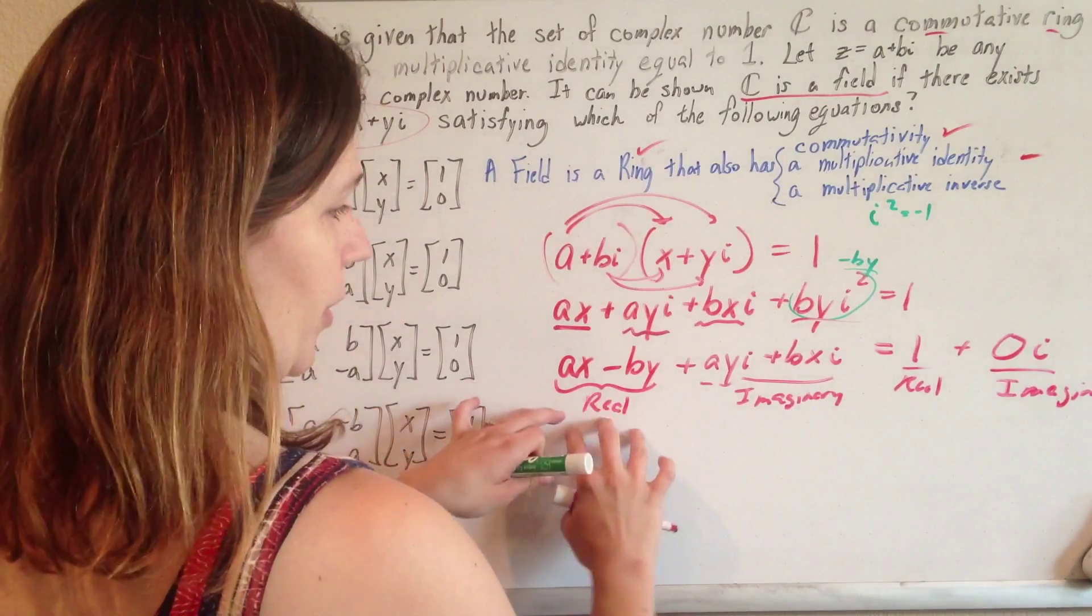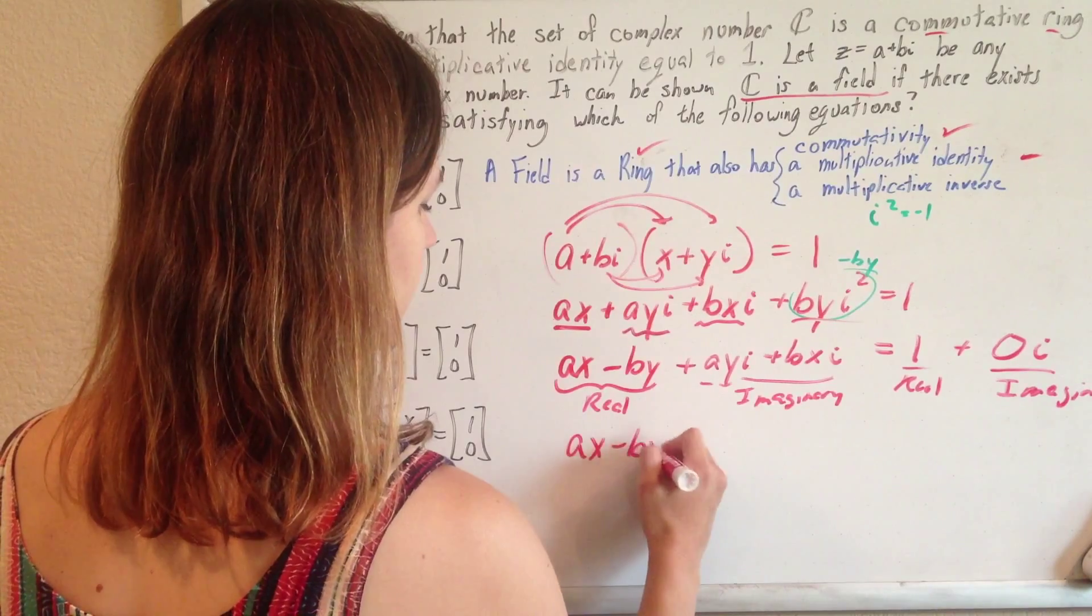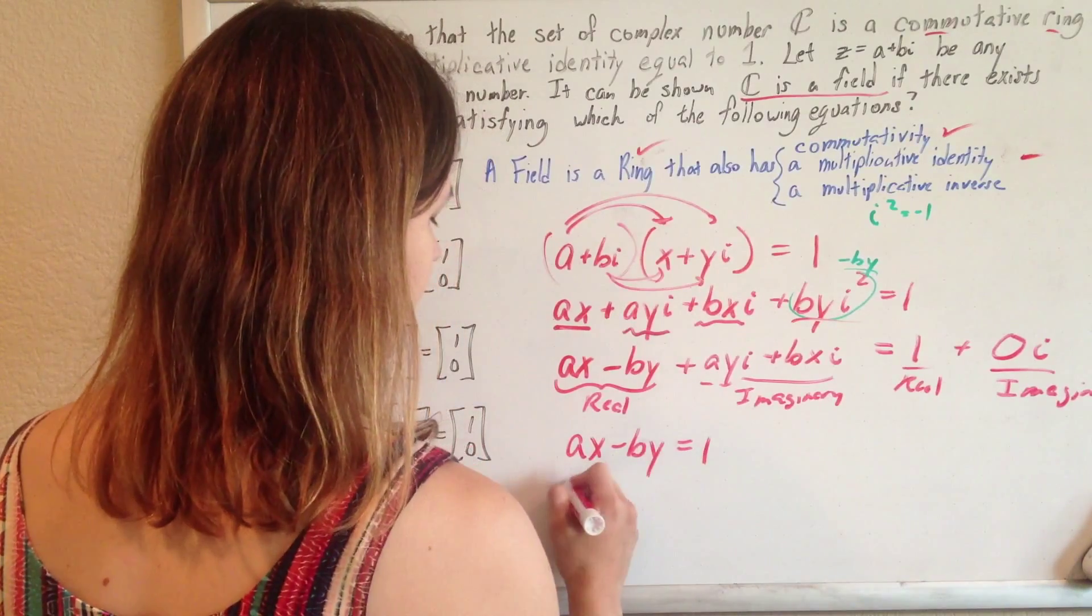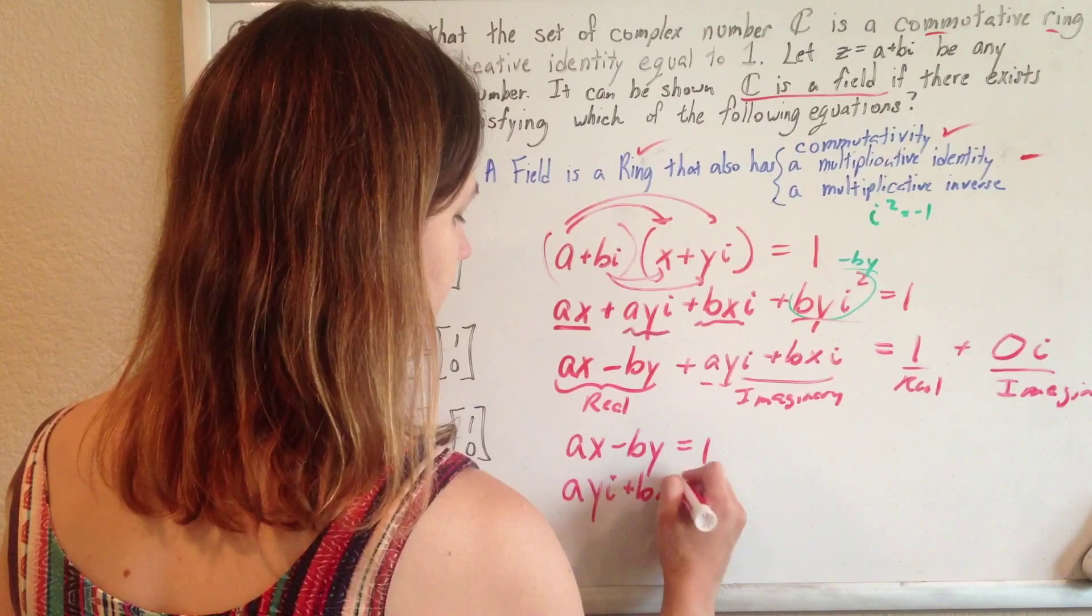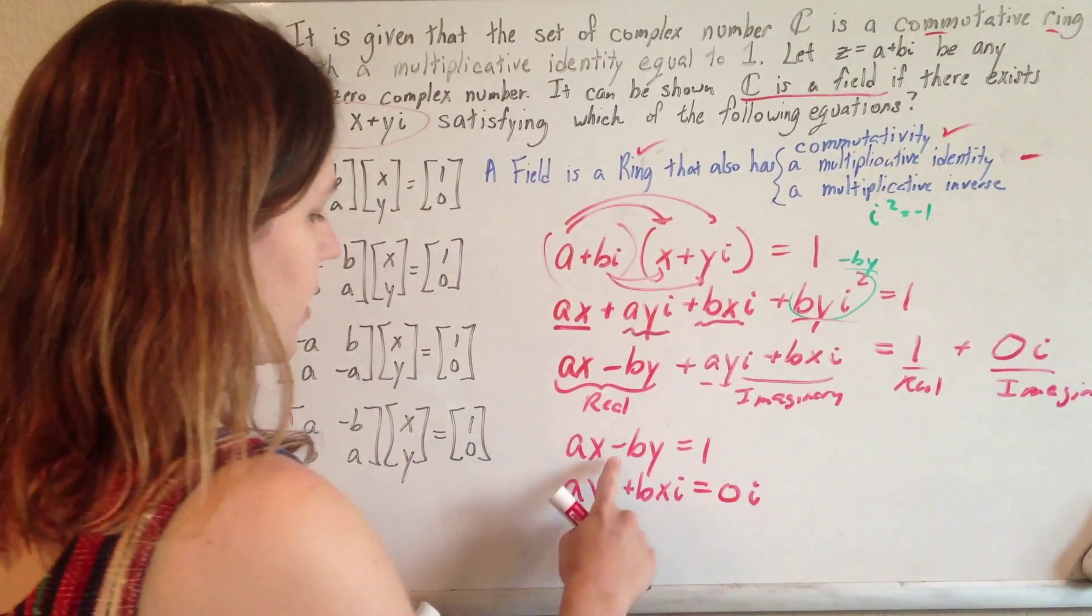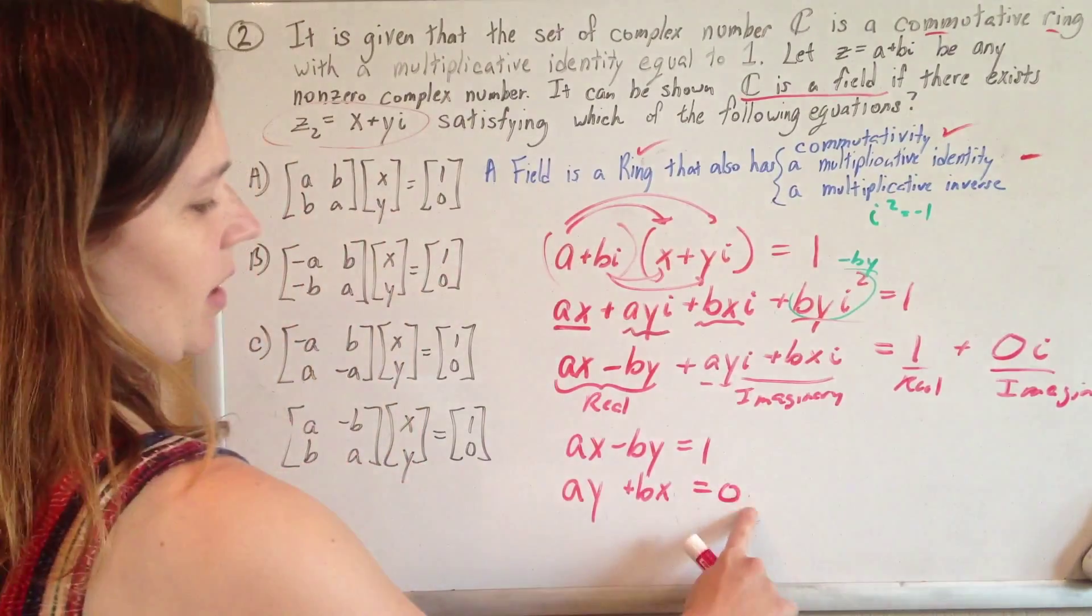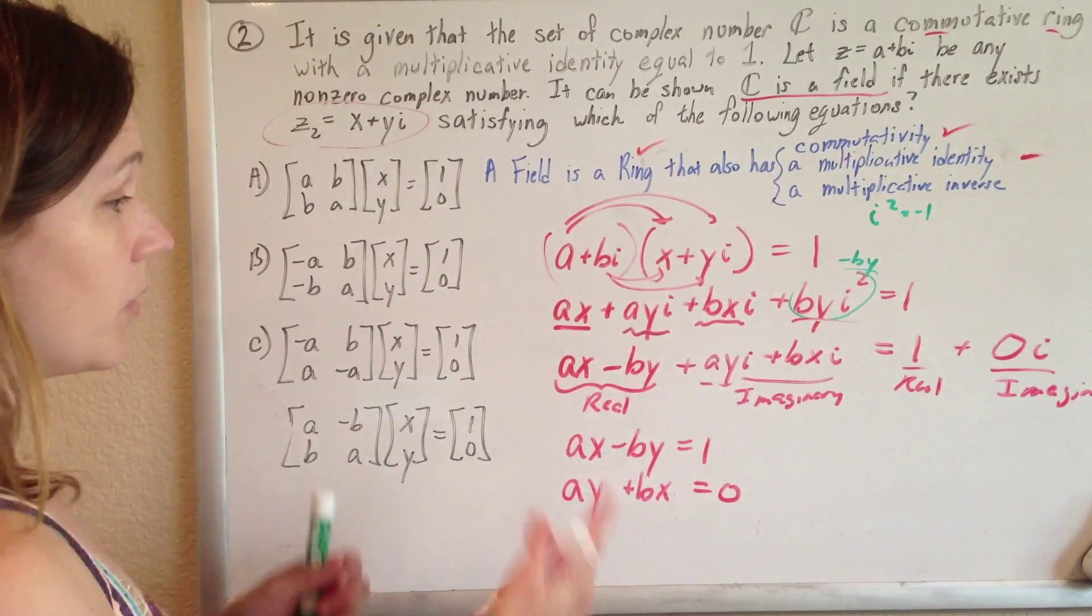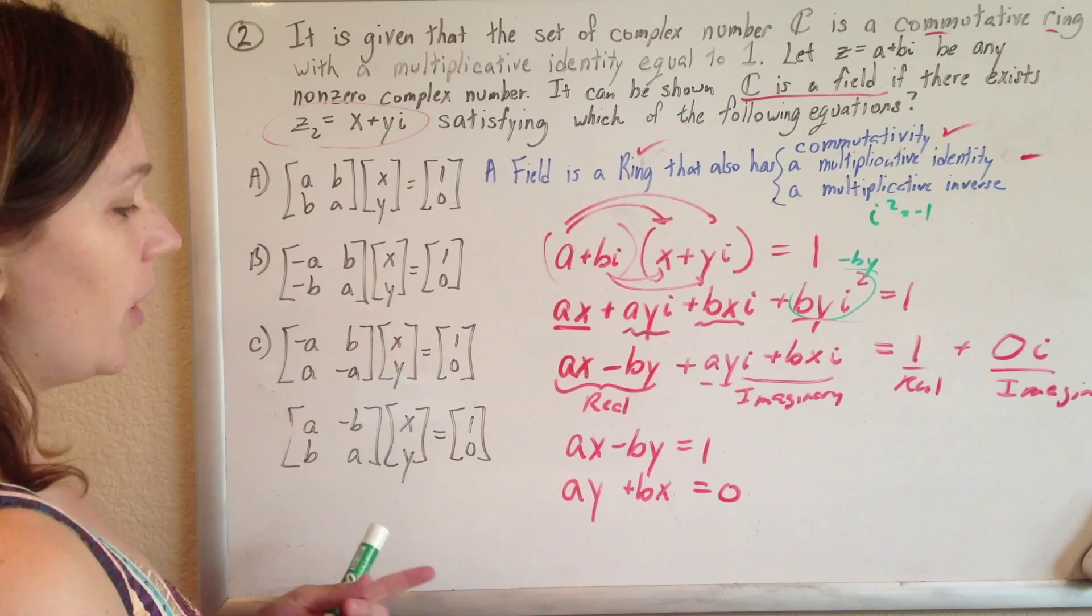So the real part over here should equal the real part over there. So ax minus by should be 1. And the imaginary part on this side should be the imaginary part on that side. So ayi plus bxi should equal 0i. You can divide everything by i if you would like. You could have factored it out and set the coefficients equal to each other also. And so these are your two equations with two unknowns.